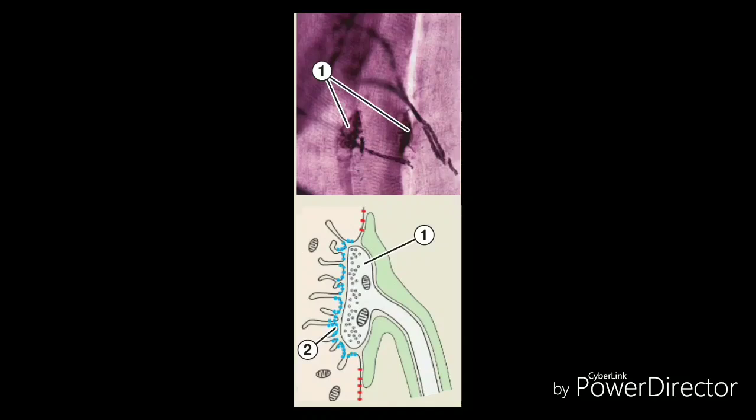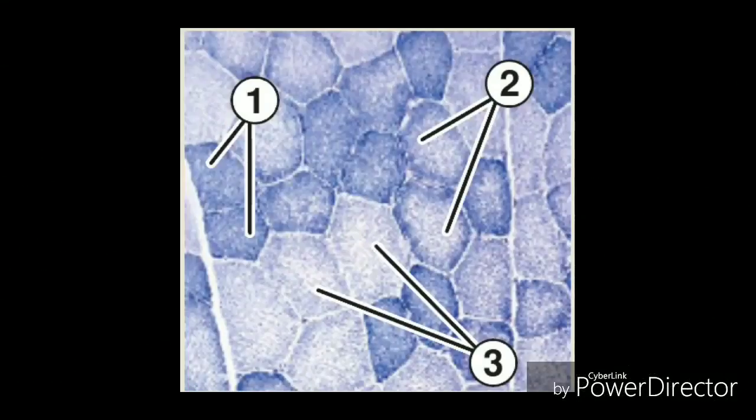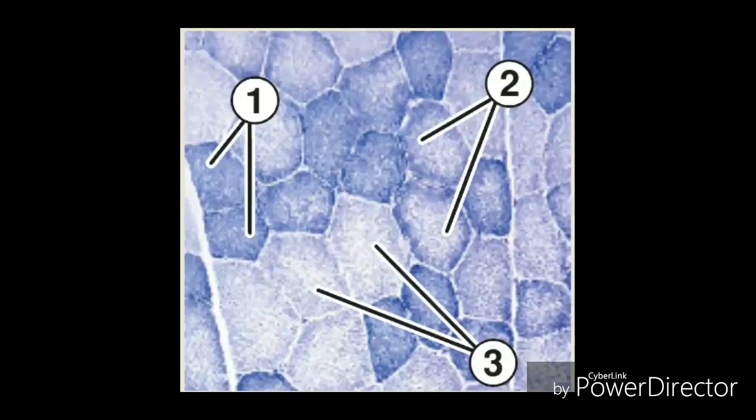In muscles involved with fine, coordinated control, the motor units are very small with 3 to 5 muscle fibers per motor neuron. Classically, skeletal muscle fibers can be categorized according to their speed of contraction and their resistance to fatigue: Slow twitch oxidative (type I) muscle fibers, fast twitch oxidative glycolytic (type IIA) muscle fibers, and fast twitch glycolytic (type IIX) fibers.